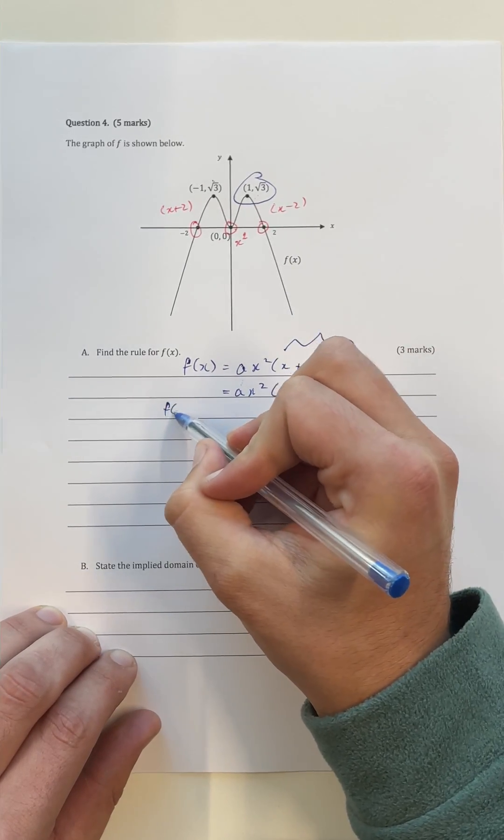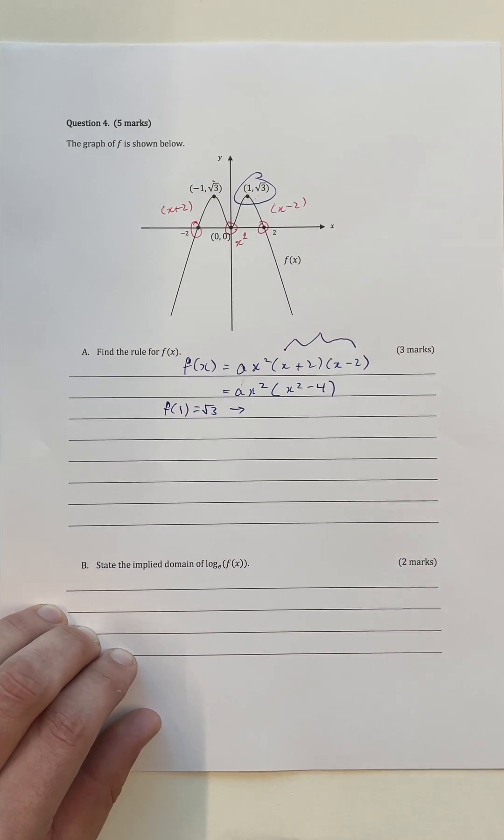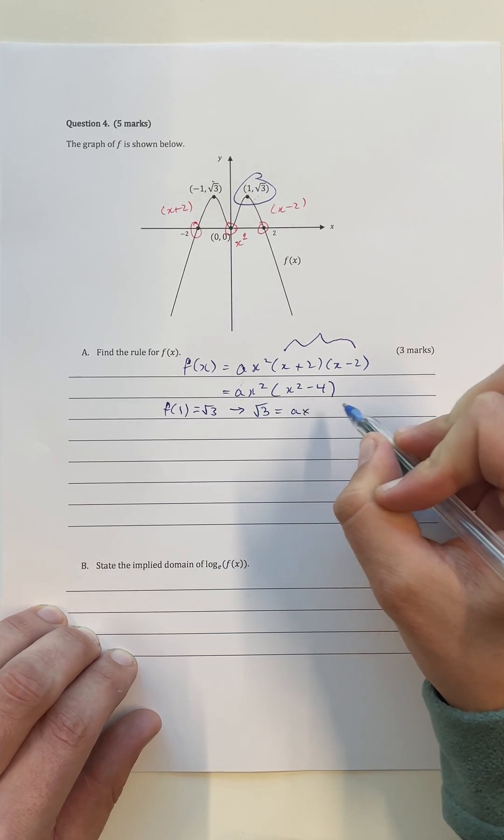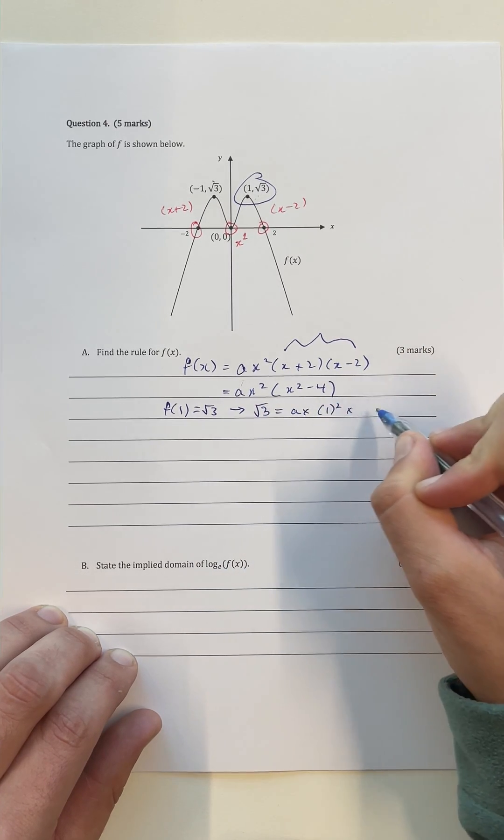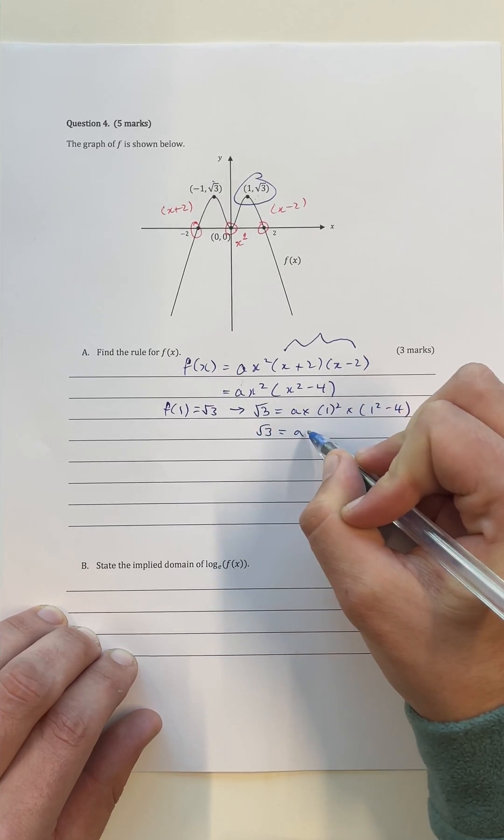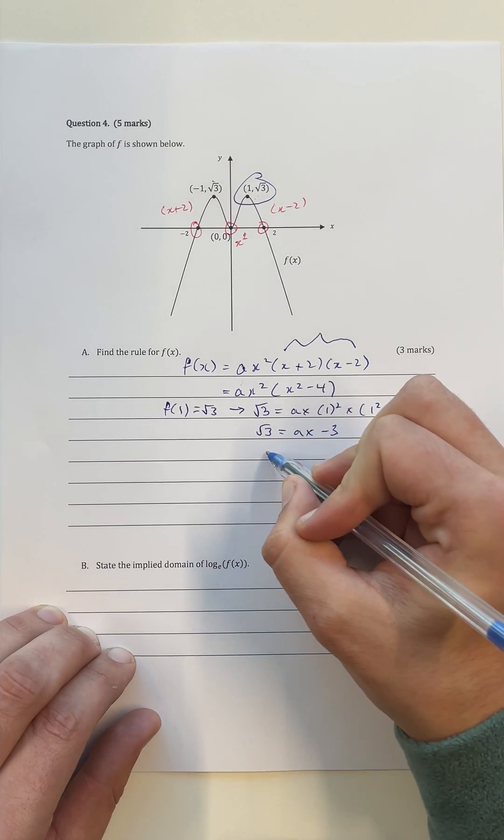So what I can then do is say f of 1 is equal to the square root of 3. When I substitute in that point, the only unknown is going to be a. Therefore, square root of 3 is equal to a multiplied by 1 squared multiplied with 1 squared minus 4. Therefore, the square root of 3 is equal to a multiplied by 1 squared, which does nothing, multiplied with negative 3.